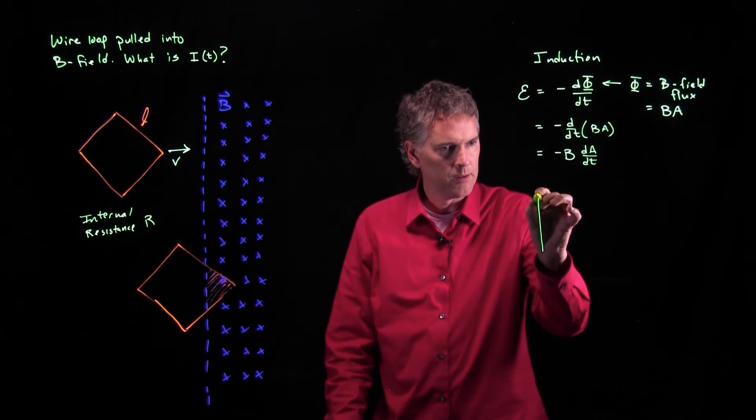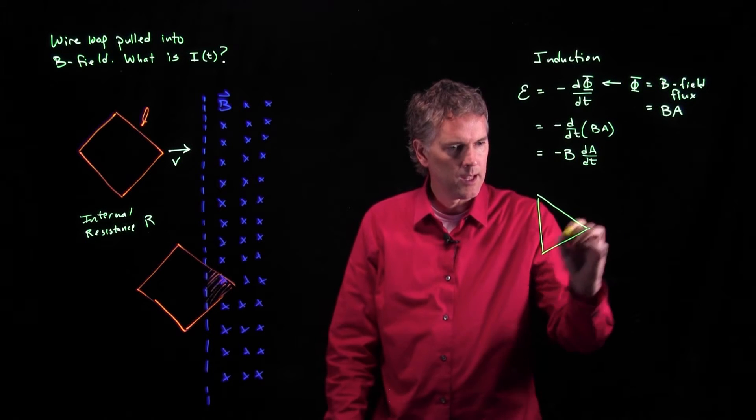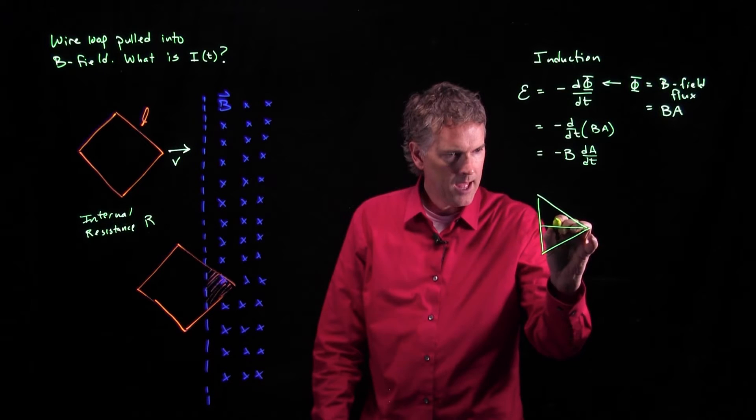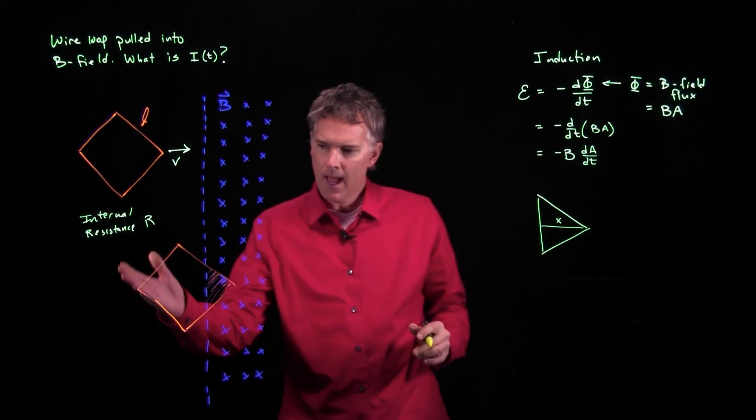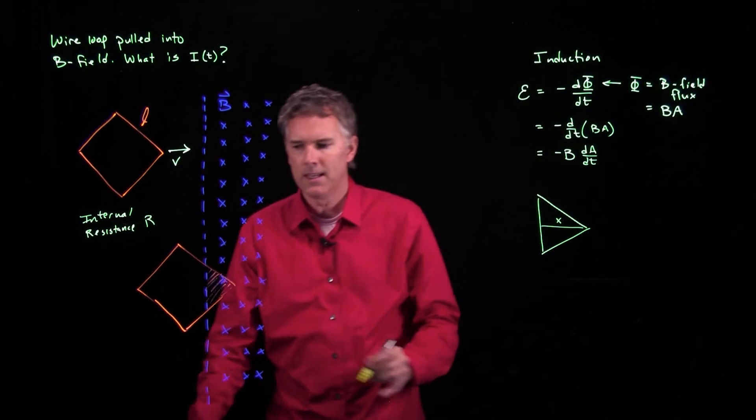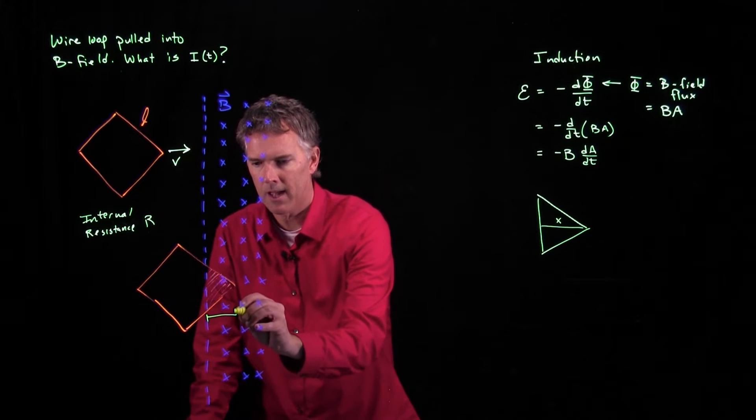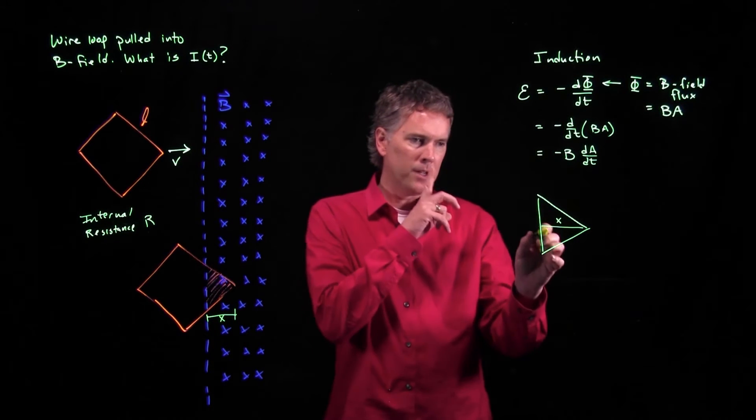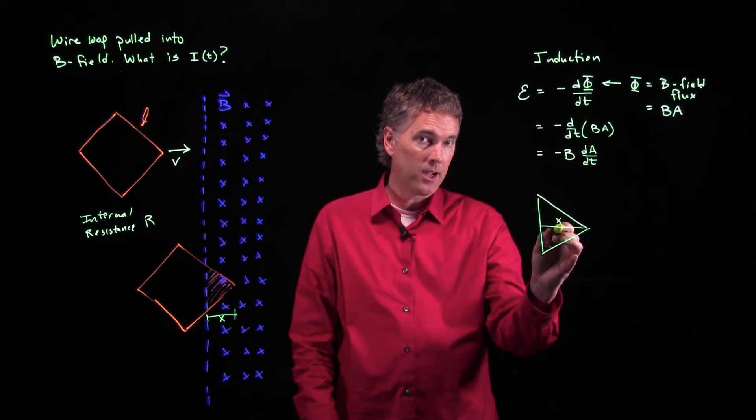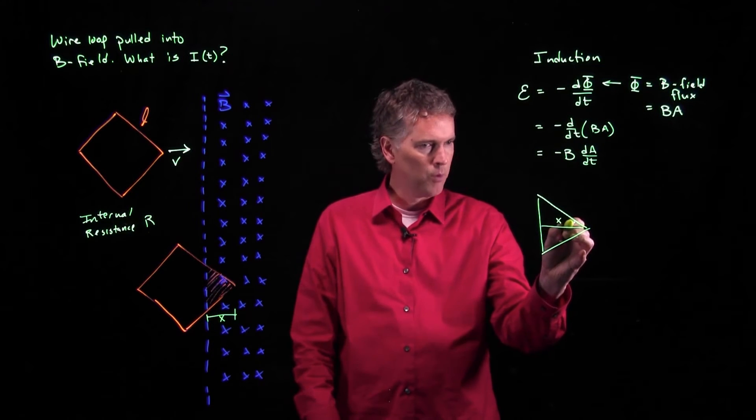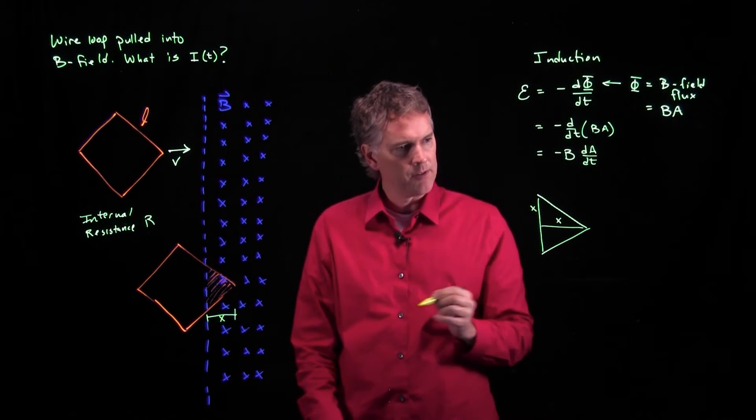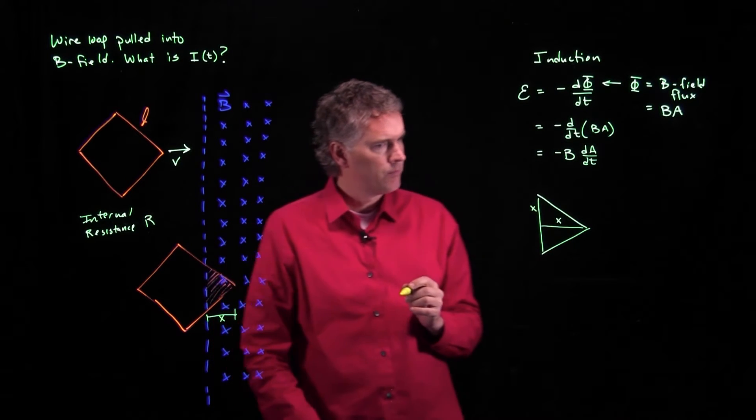So here is that triangular region. Let's call this side x. As it moves in, it moves in a distance x. And now by symmetry you can see, well, if that's x, I know this thing is a 45, 45, 90 triangle. This side right here has to be x.